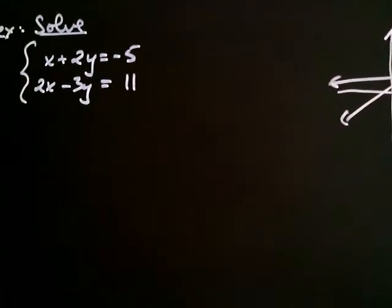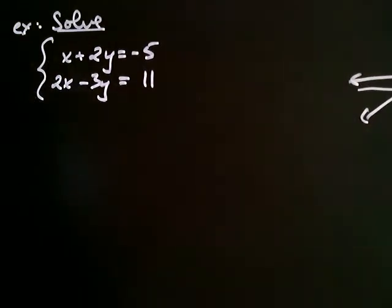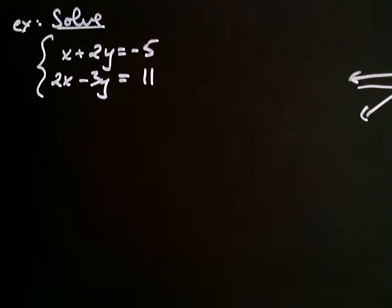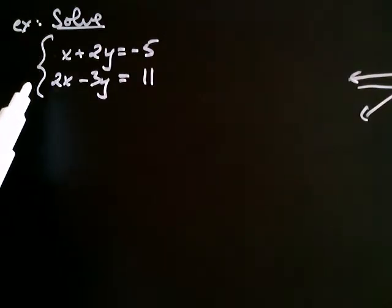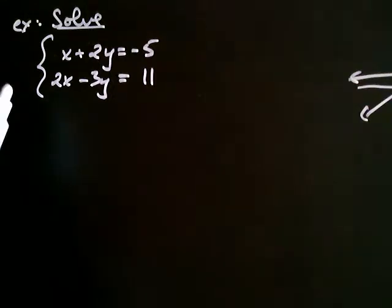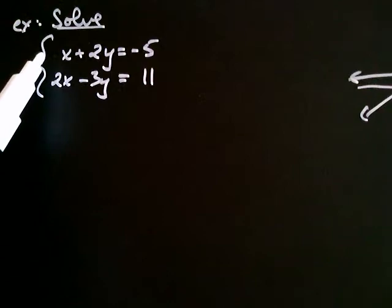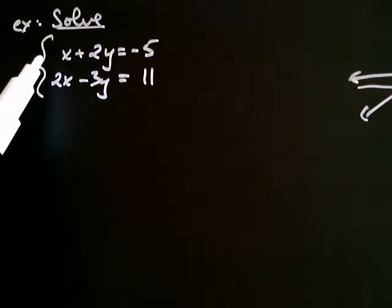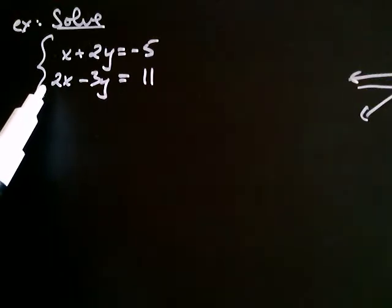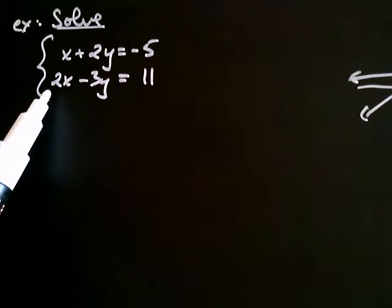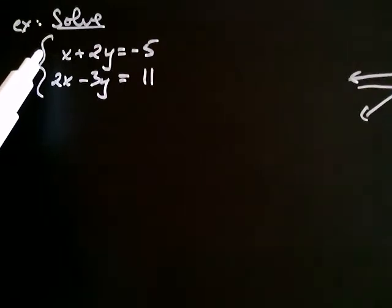Back to our system of equations — we have two lines and I'm wondering where they intersect. The way the substitution method works is you look at both lines and ask yourself: is it easy to get one of the variables in one of the equations by itself? Is it easy to get x or y by itself in this first equation? It's pretty easy to get x by itself — all I have to do is subtract 2y from both sides. In the second equation, getting x by itself isn't hard, but you'd have to divide by two, making it more complicated.